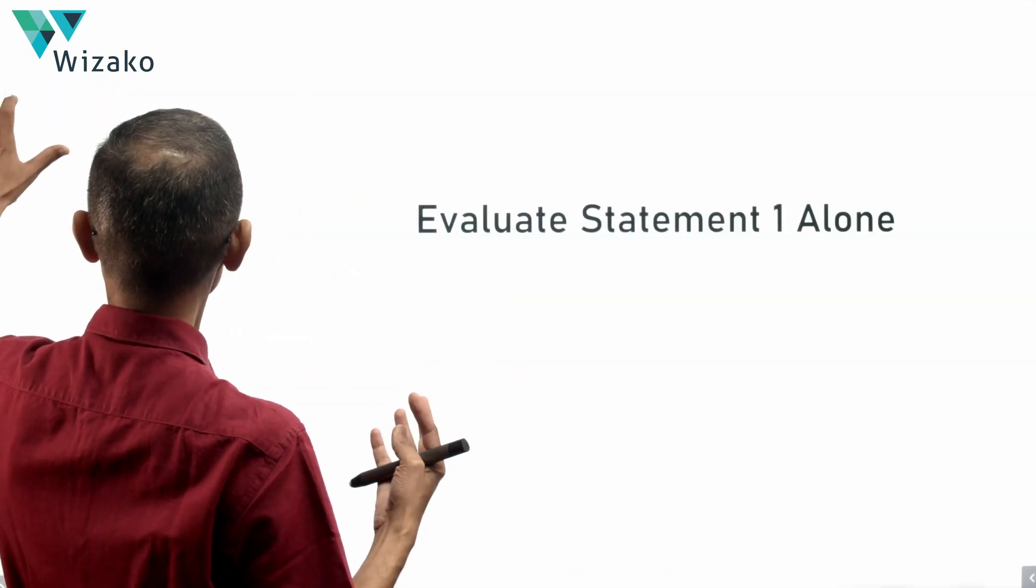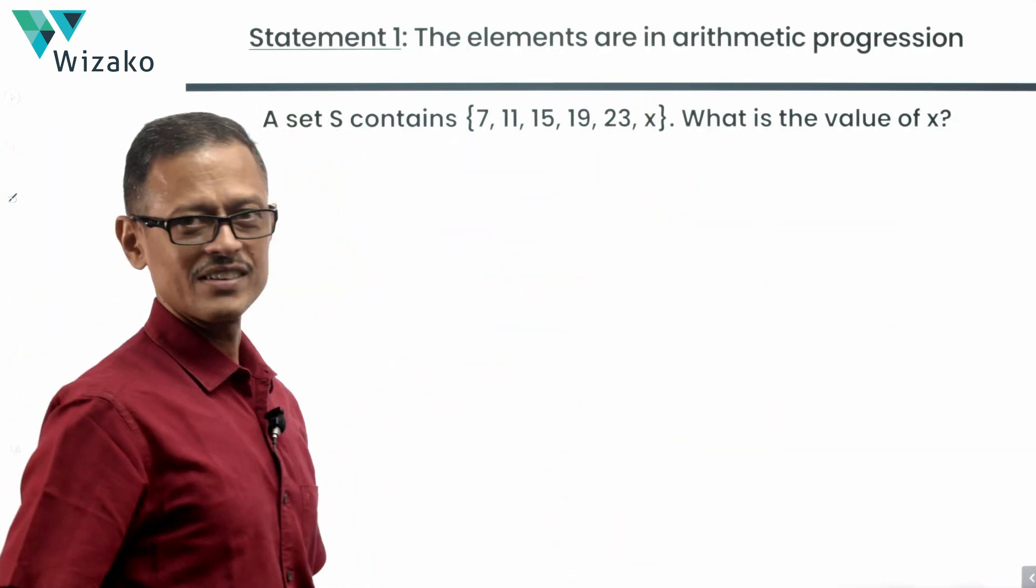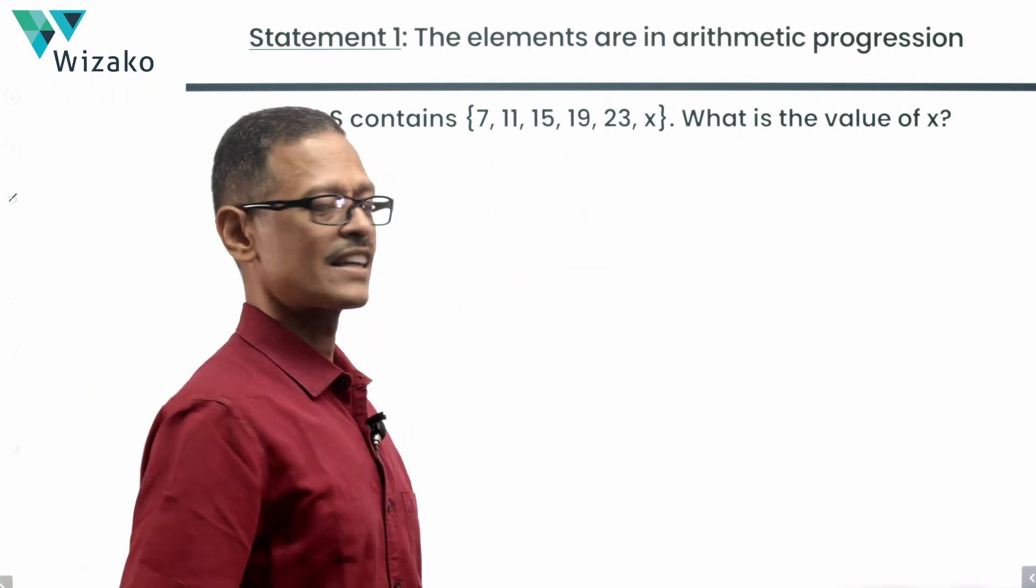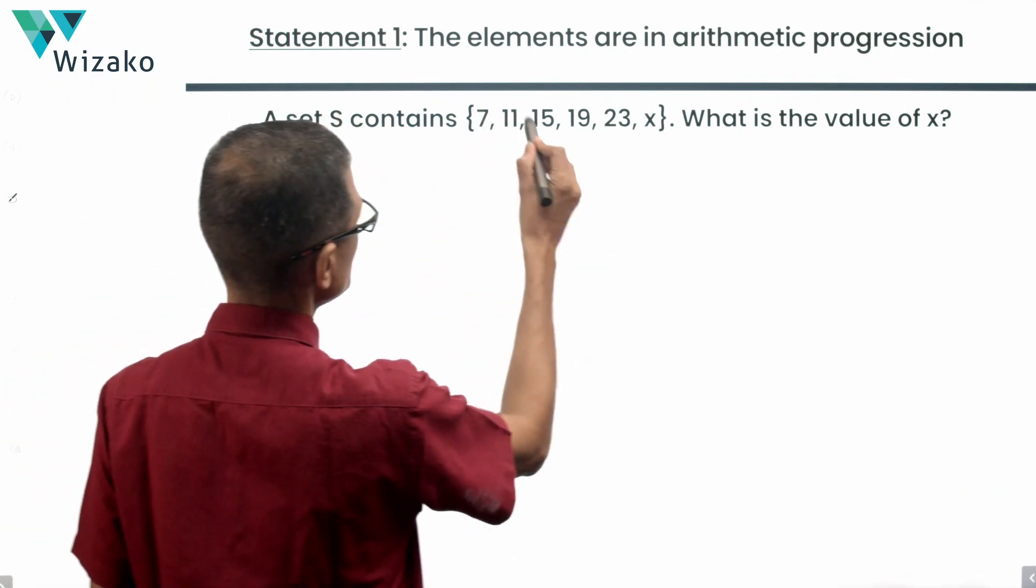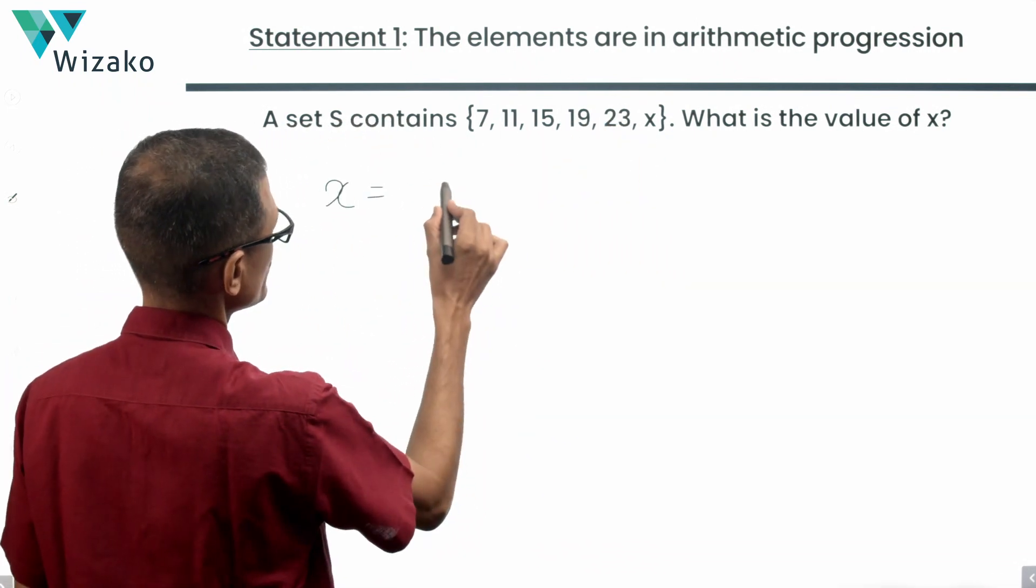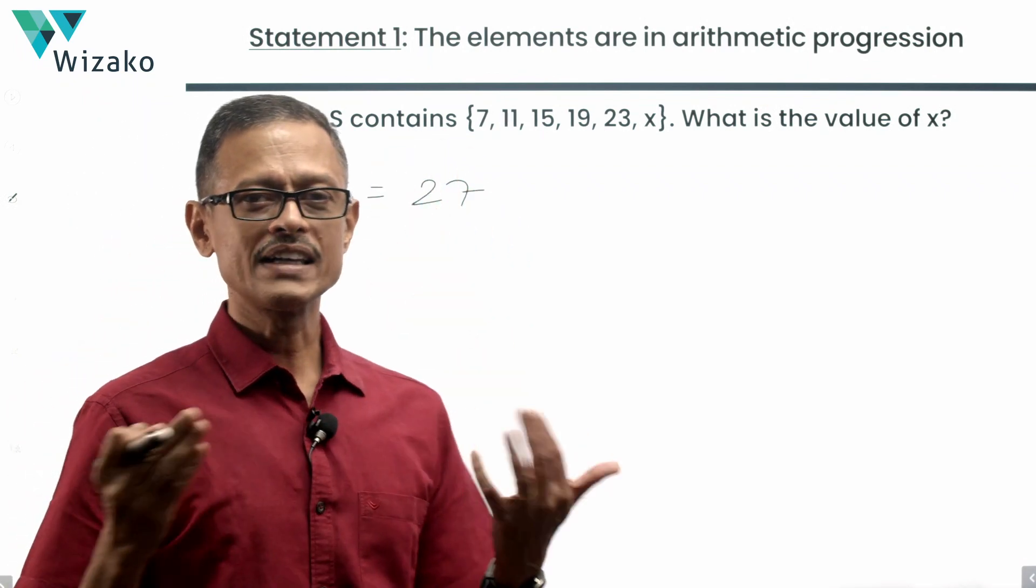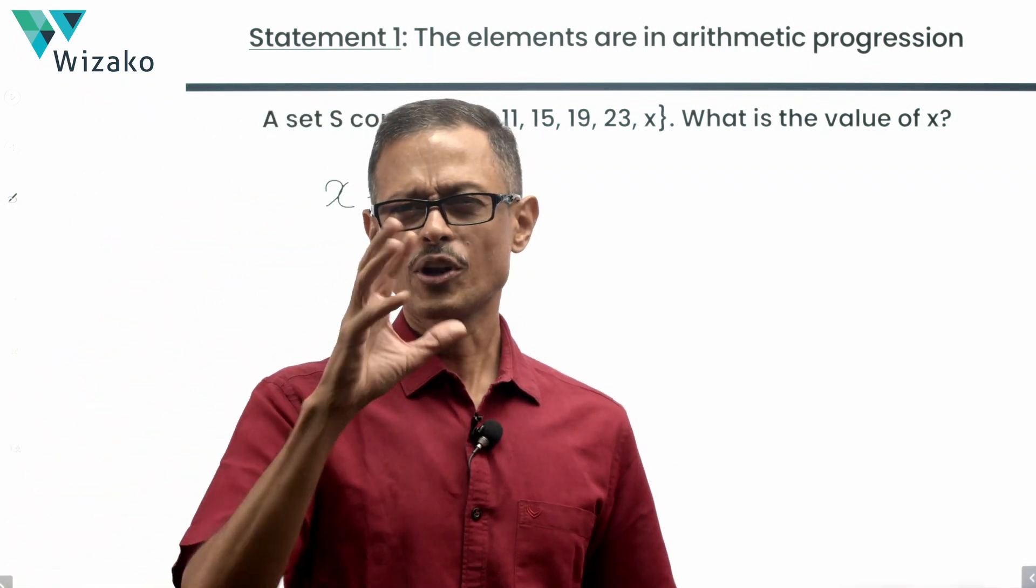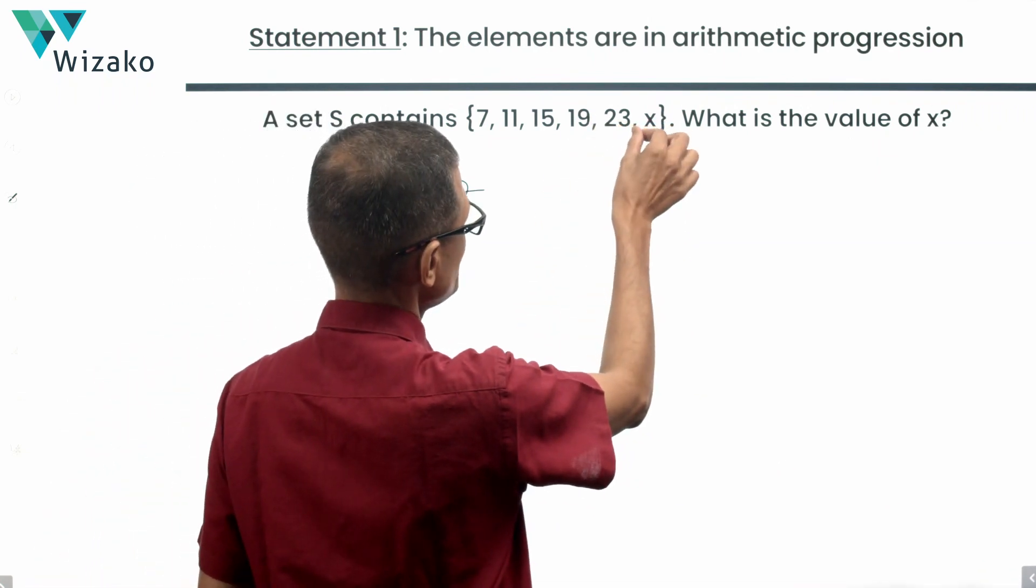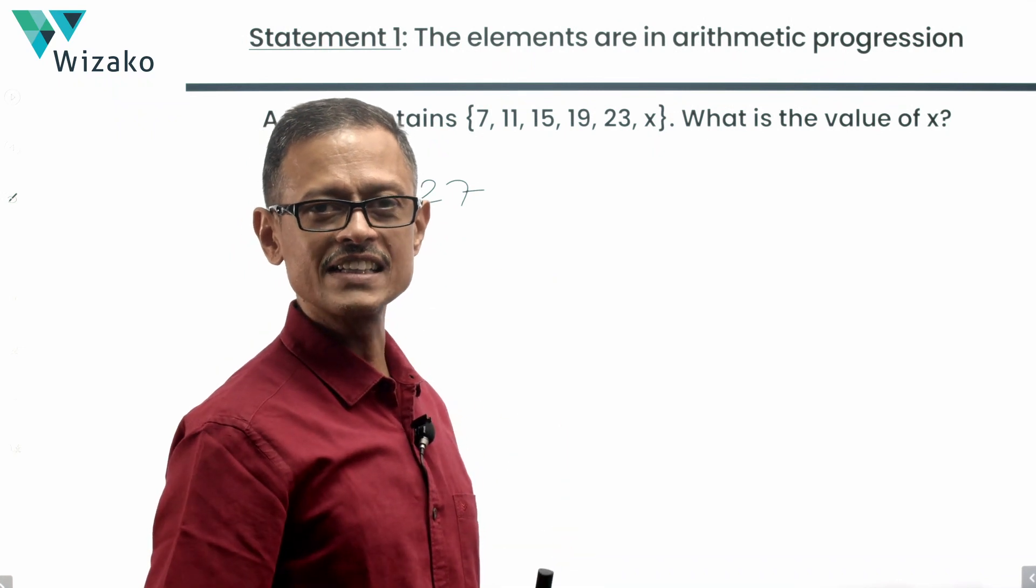Take a look at statement one and see whether this would suffice. The elements are in arithmetic progression. I said don't assume them to be in arithmetic progression. The statement is telling us it's in an arithmetic progression. 7, 11, 15, 19, 23. So the first thing that comes to our mind is if it's an arithmetic progression, 4 is a common difference. x should be equal to 27. So statement one is sufficient. Hold on.